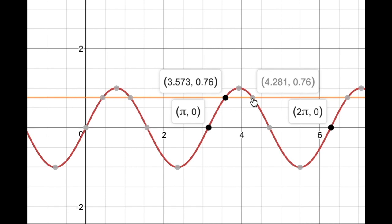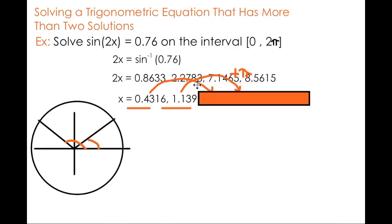So it makes sense that if I go through one more cycle I should have two more angles that satisfy my equation and result in 0.76. So if sine of 2x has a period of π, I should be able to add π to each of these angles to produce two more solutions to this equation.